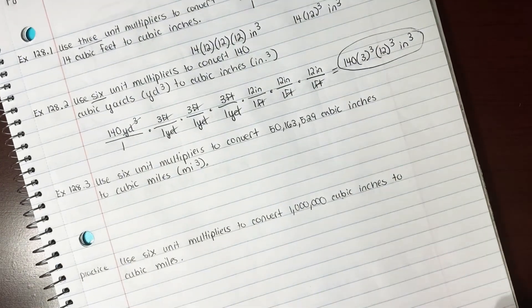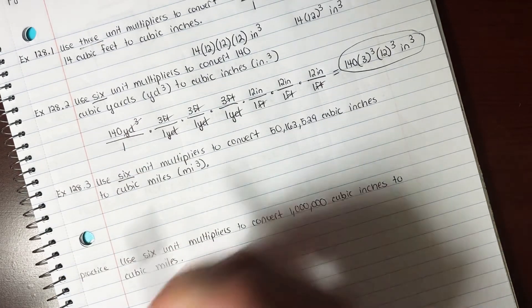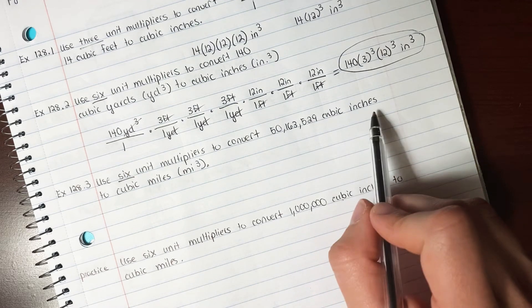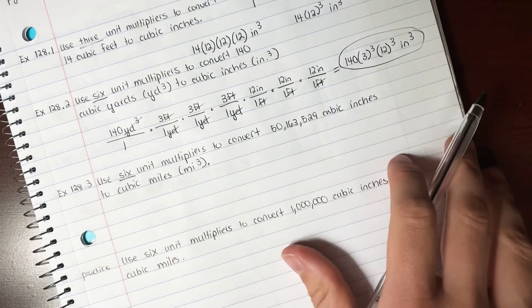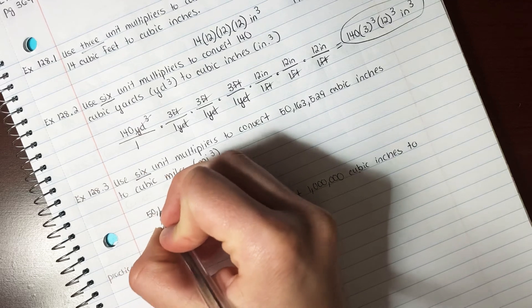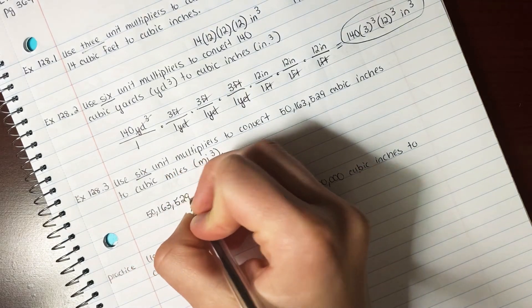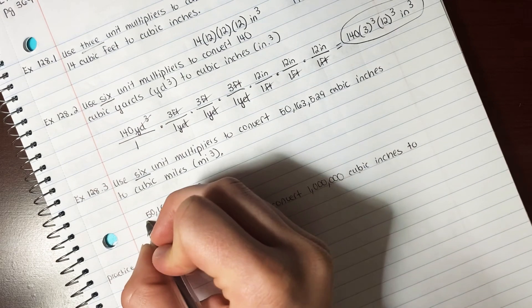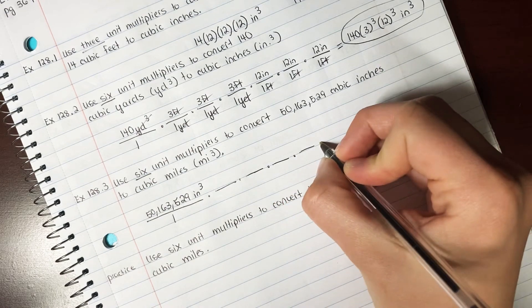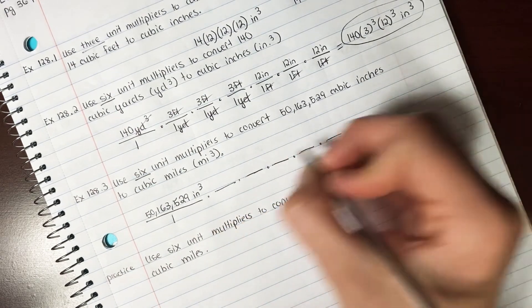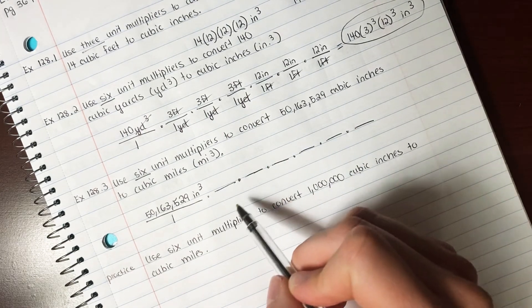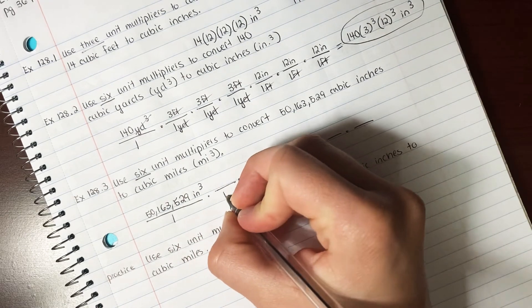128.3. Use six unit multipliers to convert 50,163,529 cubic inches to cubic miles. Oh my. So let's see here. We've got 50,163,529 inches cubed over one. And we're going to use six unit multipliers. One, two, three, four, five, six. We're going to go from inches to feet to miles. So we're going to need inches on the bottom. We're going to have one foot on the top, so we're going to have 12 inches.